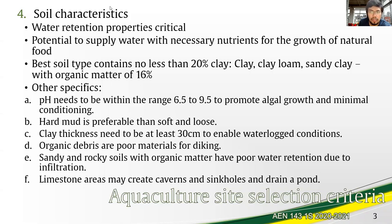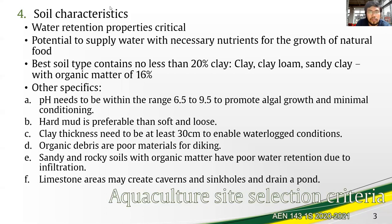Thus, the soil is best to contain no less than 20% clay. Specifically, these are the clay loam and sandy clay types, and usually the organic matter content is around 16%. Soil pH needs to be within the range 6.5 to 9.5 to promote algal growth and minimal conditioning. With minimal conditioning, we are referring to interventions such as lining, and this is for the control of the acidity of soils.